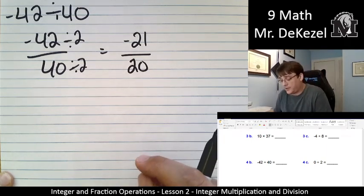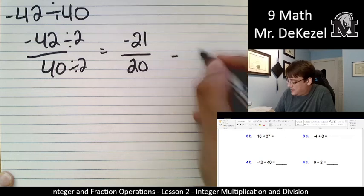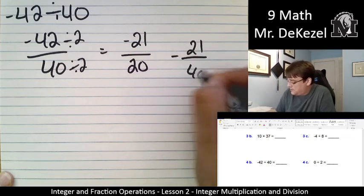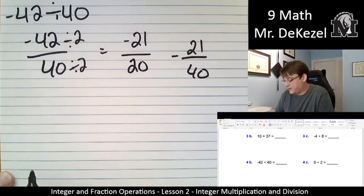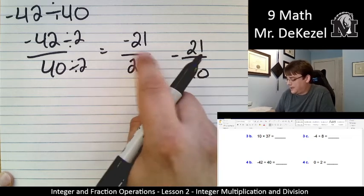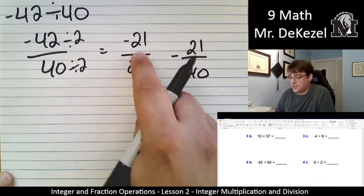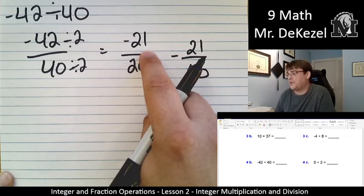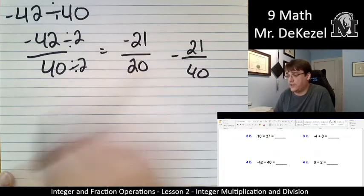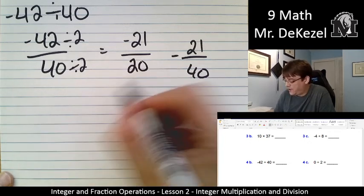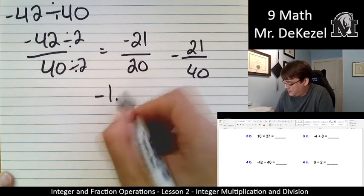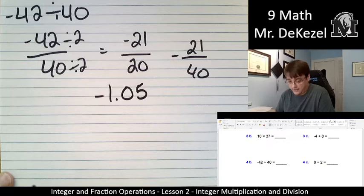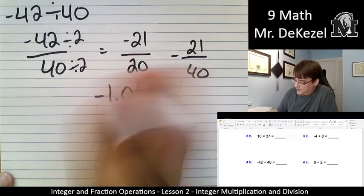So that would be perfectly acceptable as our answer, as would be negative 21 out of 40. And if you're looking for a decimal, I know that this goes into this once and then there would be one 20th left over. So that is .05. One 20th, I know, is the same as .05. So we would be having negative 1.05. That would be our answer.